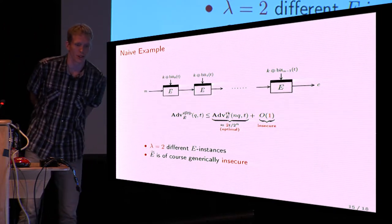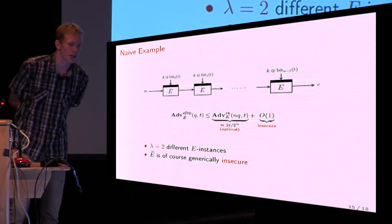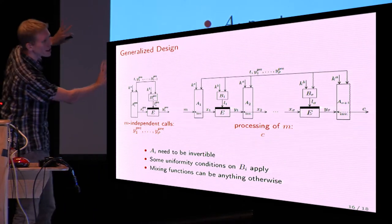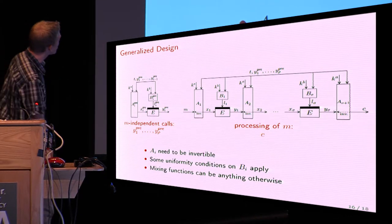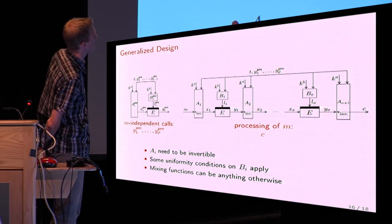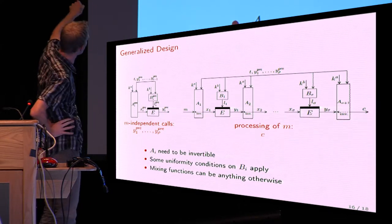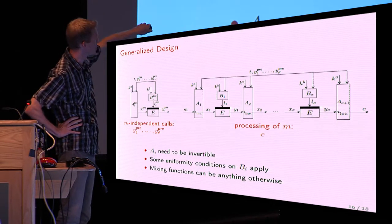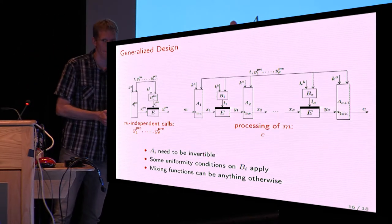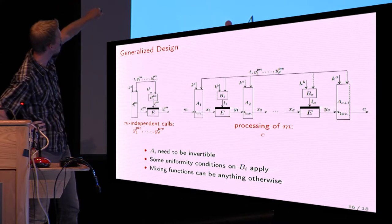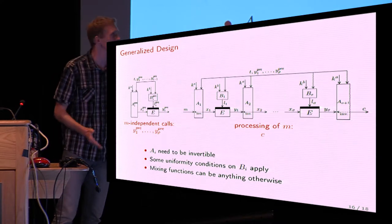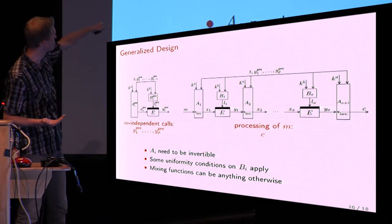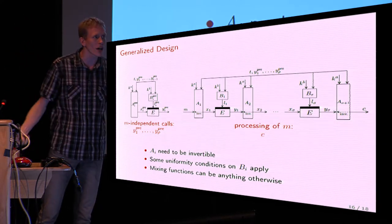This brings me to the negative result: it's not possible. You can never get any scheme that's optimally secure. To show this, we look at a generalized scheme that is quite technical but covers essentially any tweakable block cipher based on rho pre-processing calls and rho plus sigma block cipher calls total. We have rho block cipher calls for message-independent pre-processing and sigma calls to transform the message into ciphertext. There are mixing functions A_i and B_i satisfying certain conditions — the A_i's must be invertible to allow decryption, and the B_i's must be uniform in a certain way — but the framework covers essentially any tweakable block cipher design.